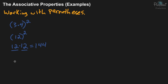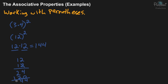12 times 12 is 144. If you're good with your multiplication tables, you should already know that. Otherwise, you can write it out and do the multiplication: 2 times 2 is 4, 2 times 1 is 2, then bring down a 0, 1 times 2 is 2, and 1 times 1 is 1. Then you add those and you get 144.